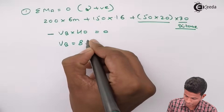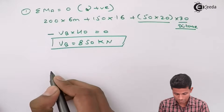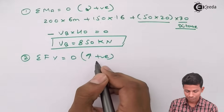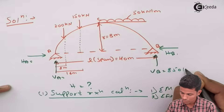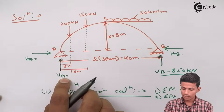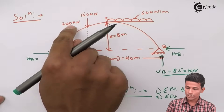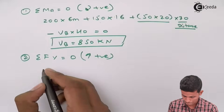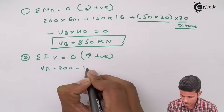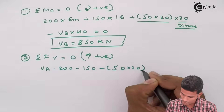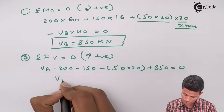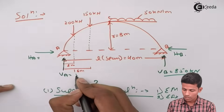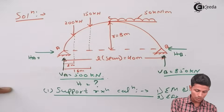After that, applying summation of FY = 0 with upward positive: VA − 200 − 150 − (50 × 20) + 850 = 0. Solving this gives VA = 500 kN.